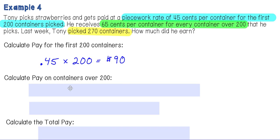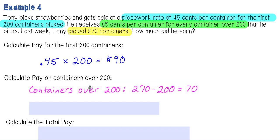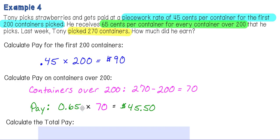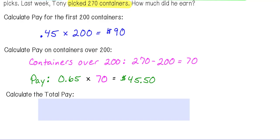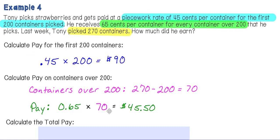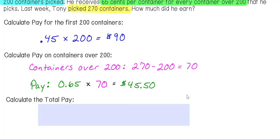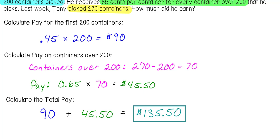Next, we determine how many containers he picked over 200: 270 minus 200 equals 70 containers. At the rate of $0.65 per container, that is $0.65 times 70, which equals $45.50. The total pay is what he earned for the first 200 containers plus what he earned for the additional 70 containers: $90 plus $45.50, so Tony earned $135.50.